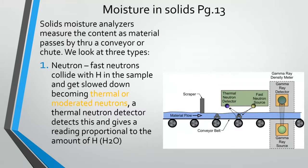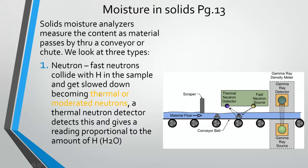Measuring moisture in solids: solid moisture analyzers measure the content of material as it passes by on a conveyor or through a chute. There are three types, all similar in basic approach: material flows on a conveyor, a scraper maintains a consistent depth of the medium, and the measuring device emits some form of energy that is absorbed by the hydrogen in the material, with the difference detected as a measurement.